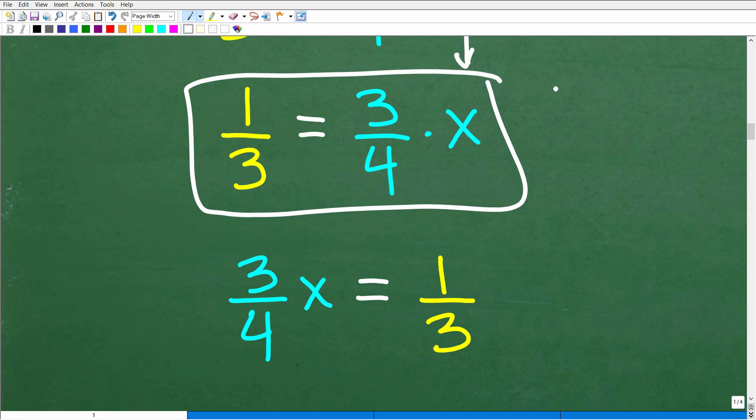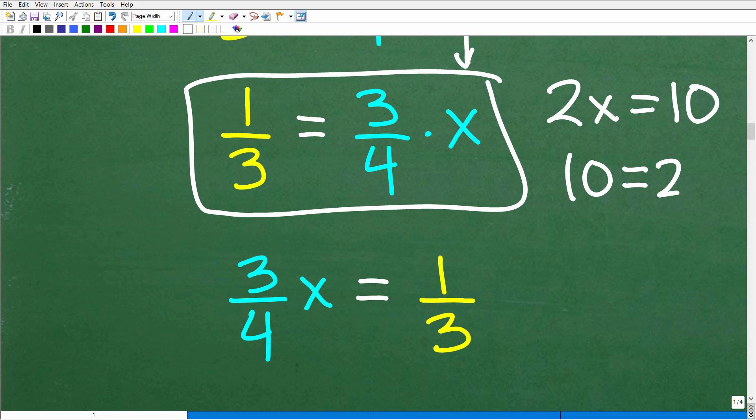Now typically in algebra we'd like to have our variables to the left. So in other words, if I write an equation like 2X is equal to 10, it's not wrong to write the equation like 10 is equal to 2X, but typically we like the variable to the left. So just understand that 2X is equal to 10 is equivalent to 10 is equal to 2X. So in this case, if I have my variable on the right-hand side, I can just take my variable term and put it on the left and put my number on the right. I have three fourths times X or three fourths X is equal to one third. So now I'm going to concentrate on solving this basic equation. Three fourths X is equal to one third.